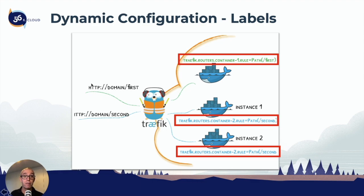We can have the main first, and then it routes using this label — traefik.routers.container-one, which is user-defined — then a rule like path equals slash first. And you can see the same for path slash second, path slash third. We can define all of these through labels.